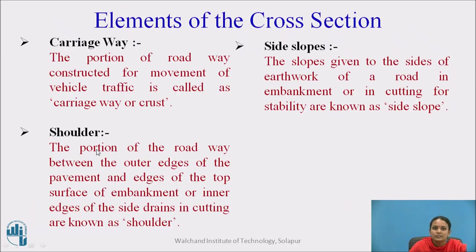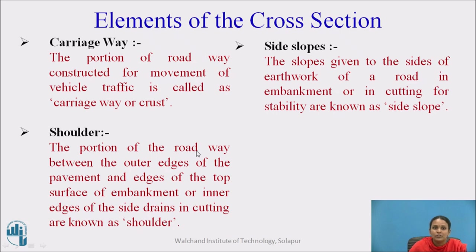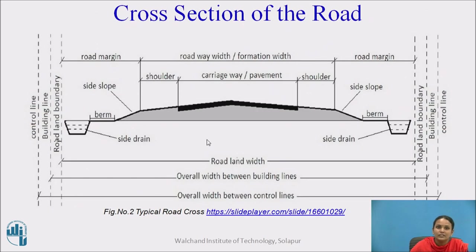Carriageway, shoulders, and side slope. Carriageway means it is the actual part of the road which comes in contact with traffic — the uppermost part of the road surface. Shoulders are the portion of the roadway between the outer edge of the pavement and the edge of the top surface of the embankment — from the road margin to the upper surface of the embankment.